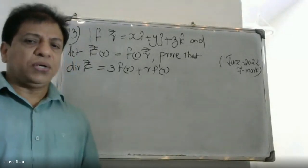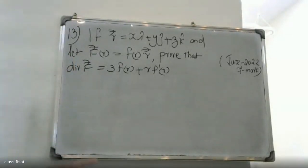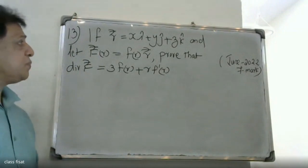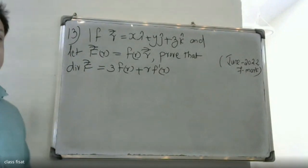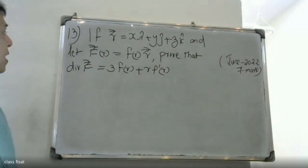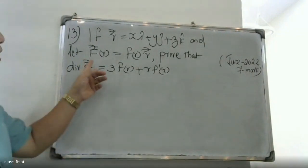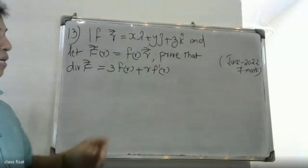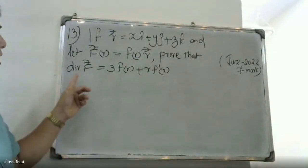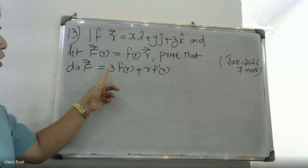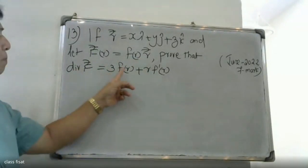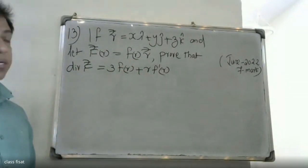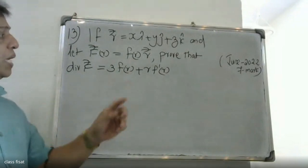Good morning students. The question is: given that f vector equals f(r) times vector r, show that div f equals 3f(r) plus r times f'(r).